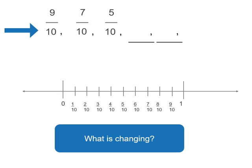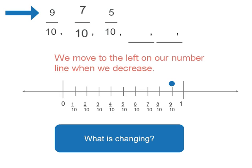Our first number is 9 tenths. So remember, the thing that's changing is the numerator, the number on the top of our fraction. We've got 9 tenths. So if we put a little ball where 9 tenths is, then look at our next number. It's 7 tenths. So it's decreasing. So we're subtracting something.